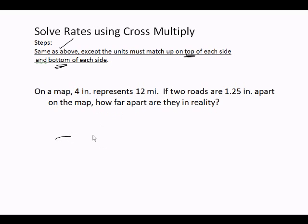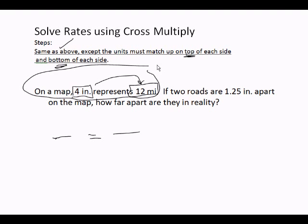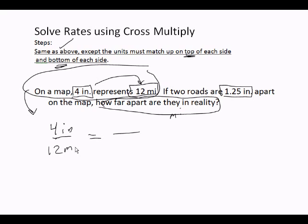So when I have two fractions, the units must match on the top and the bottom. On a map, I have 4 inches that represent 12 miles. So this is the first part of the problem. If the roads are 1.25 inches apart on the map, how far are they really? In other words, how many miles?